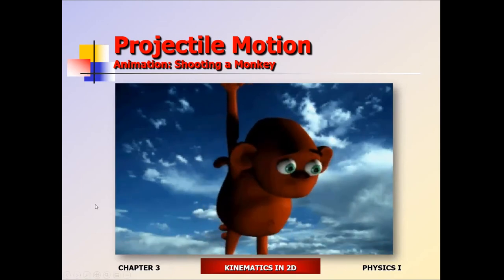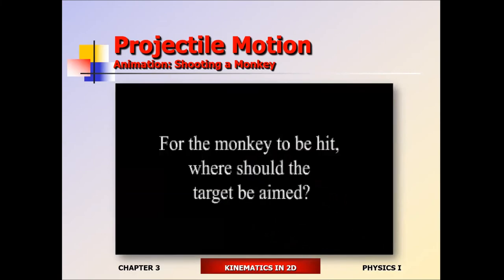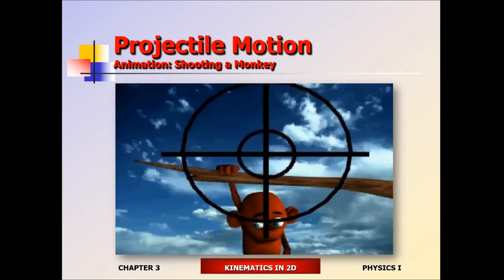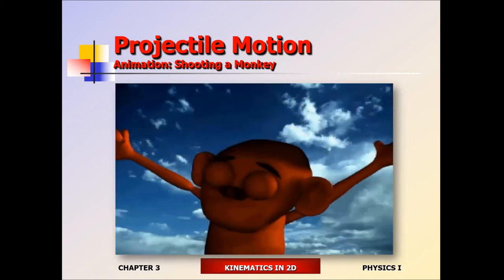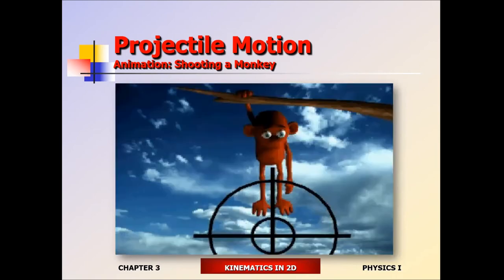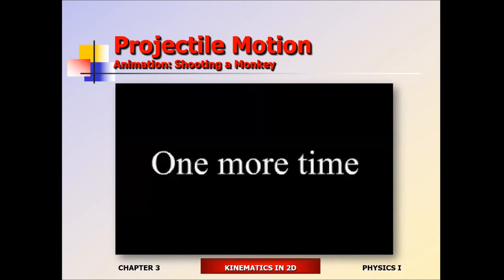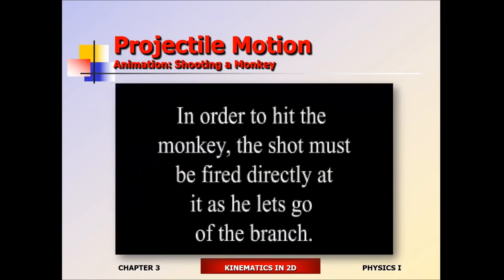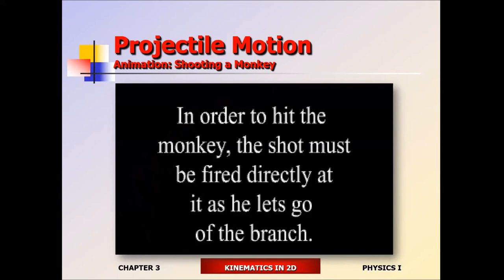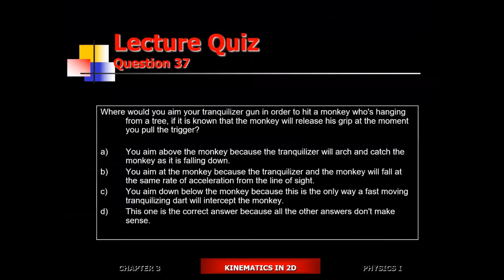Conclusion — three options: aiming above the monkey won't work. Aiming down below the monkey is not an option either — once the monkey releases its grip, both monkey and cannonball fall at the same rate from the line of sight. The only viable option is aiming directly at the monkey. Both the monkey and the cannonball fall from the line of sight at the same rate, so you will hit the monkey 100% of the time.